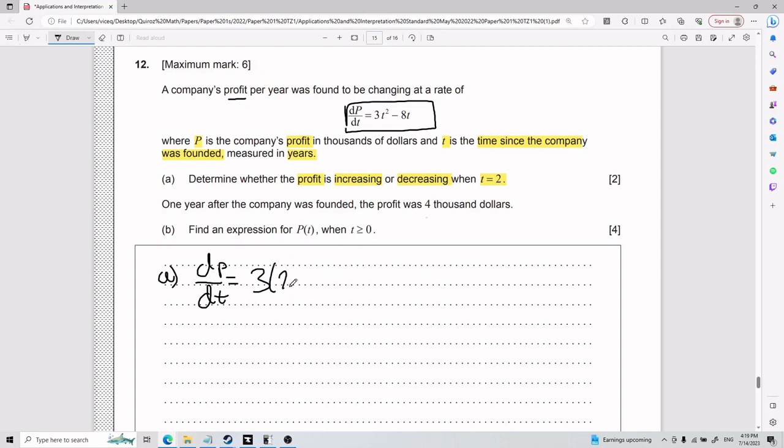So plug in t equals 2. So 3 times 2 squared minus 8 times 2. You end up with 3 times 4 minus 16. This is 12 minus 16, which gives you negative 4. So what is my rate of change when t equals 2? It's negative 4. Is that positive or negative? It's negative. So you can say that P is decreasing.